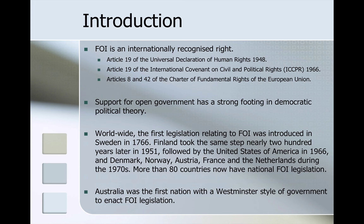The first legislation relating to freedom of information occurred all the way back in Sweden in 1766. Finland ultimately took the same step nearly 200 years later in 1951, followed by the United States of America in 1966 and several other European countries in the 1970s. We now have more than 80 countries around the world with national freedom of information legislation regimes. Australia was the first nation with a Westminster or parliamentary style of government to enact freedom of information legislation.